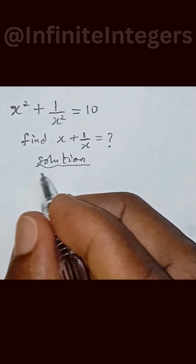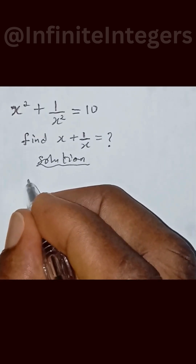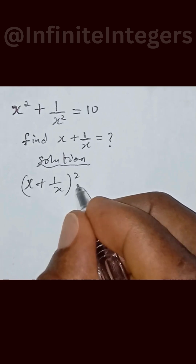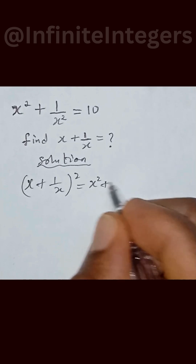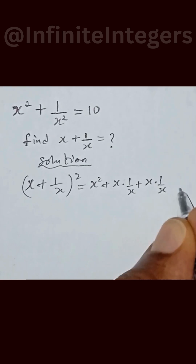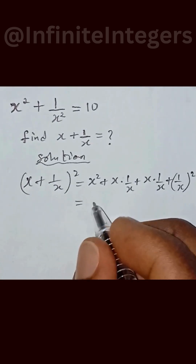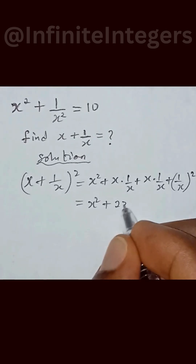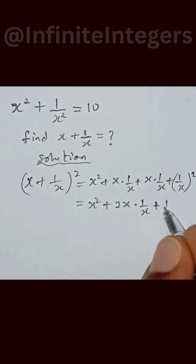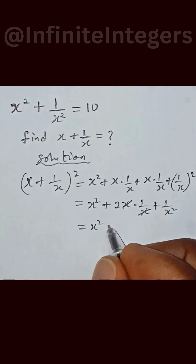We need to expand this. We can say that x plus 1 over x, squared, can be given as x squared plus x multiplied by 1 over x plus x multiplied by 1 over x plus 1 over x squared. This equals x squared plus 2x multiplied by 1 over x plus 1 over x squared. The x cancels, and we are left with x squared plus 2 plus 1 over x squared.